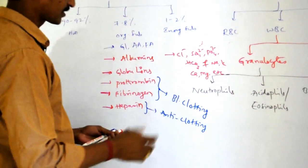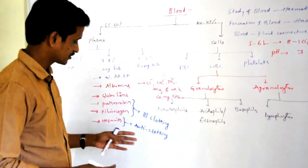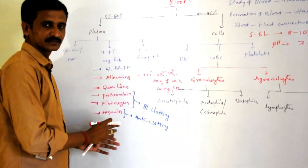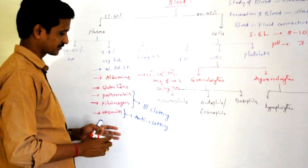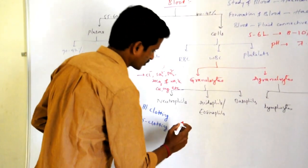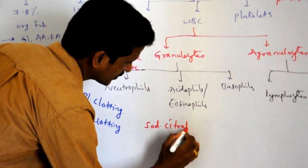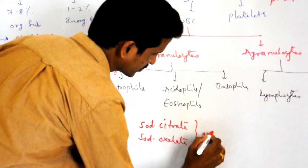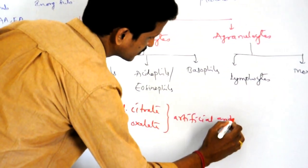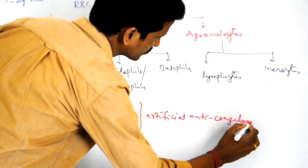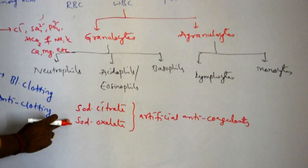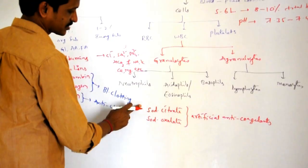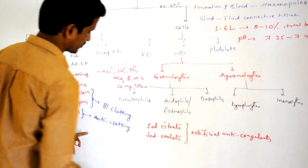During blood tests such as CBP (complete blood picture), when blood is taken outside, sodium citrate and sodium oxalate are added. These two are artificial anti-coagulants — they do not allow blood to clot outside the body. Just like heparin is a natural anti-coagulant, sodium citrate and sodium oxalate are artificial anti-coagulants.